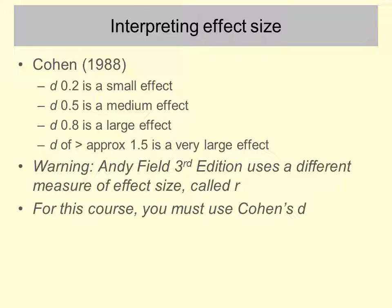Cohen established rules for interpreting in words the numbers that come out of the effect size calculation. A Cohen's D of 0.2 or less is a small effect; between 0.2 and 0.5 is small to medium; 0.5 is medium; up to 0.8 is large; more than 1, particularly more than 1.5, is a very large effect. Andy Field uses R as an effect size measure, but in this course we use Cohen's D.